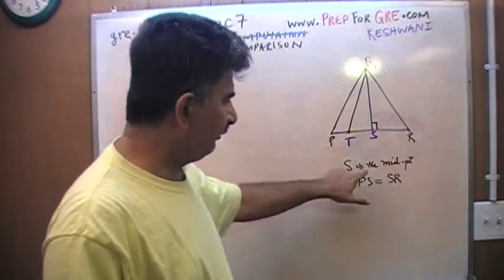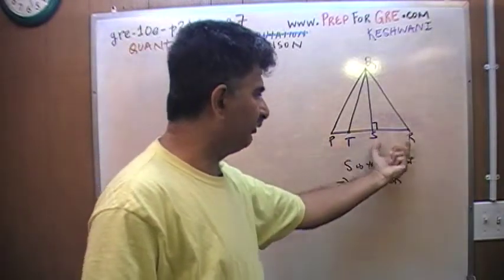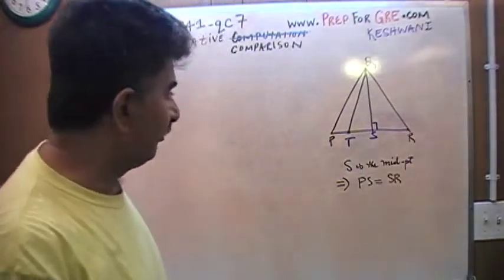Point S is the midpoint of P to R. If S is the midpoint of P to R, that implies PS has to equal SR, which is what I've written here.